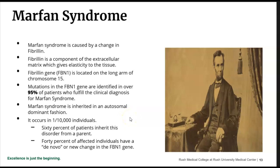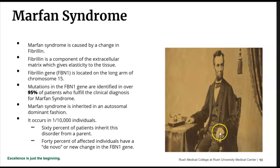Marfan syndrome occurs in about 1 in 10,000 individuals. 60% of patients inherit this disorder from a parent, but in 40% it's something new. Once they have it, they're at a 50% risk of passing it on to their children. Abraham Lincoln is a notable example — a lot of people believe he had Marfan syndrome. His clinical characteristics include a very long face and long fingers, medically termed arachnodactyly — 'arachno' meaning spider, so long spider fingers.